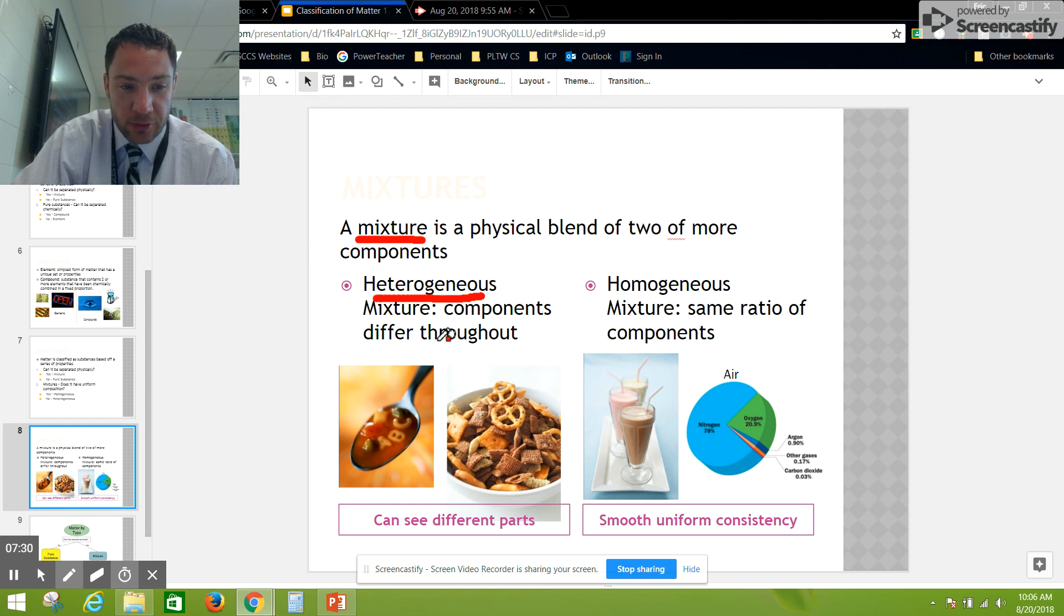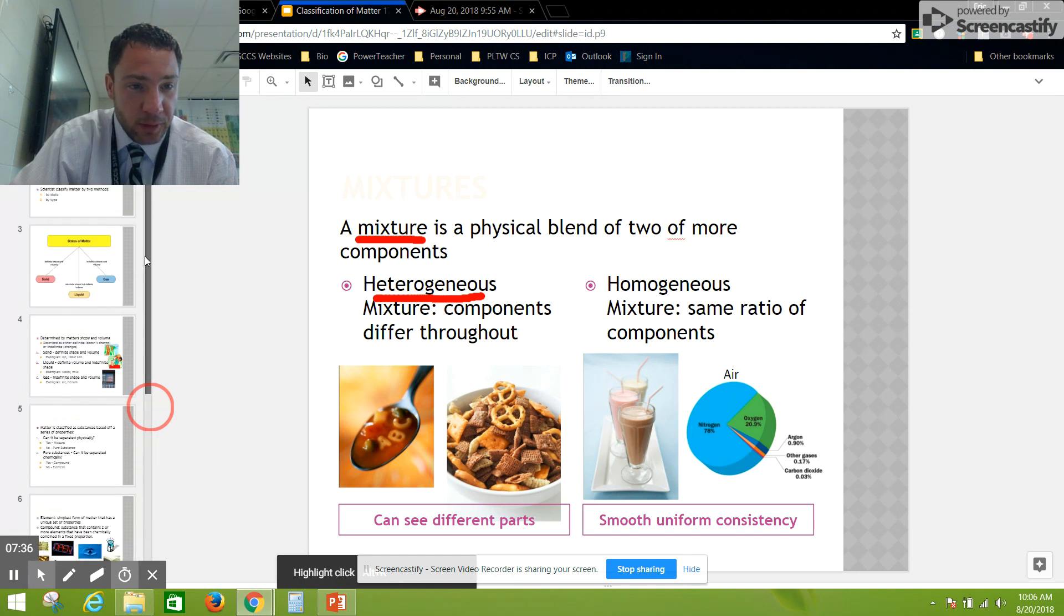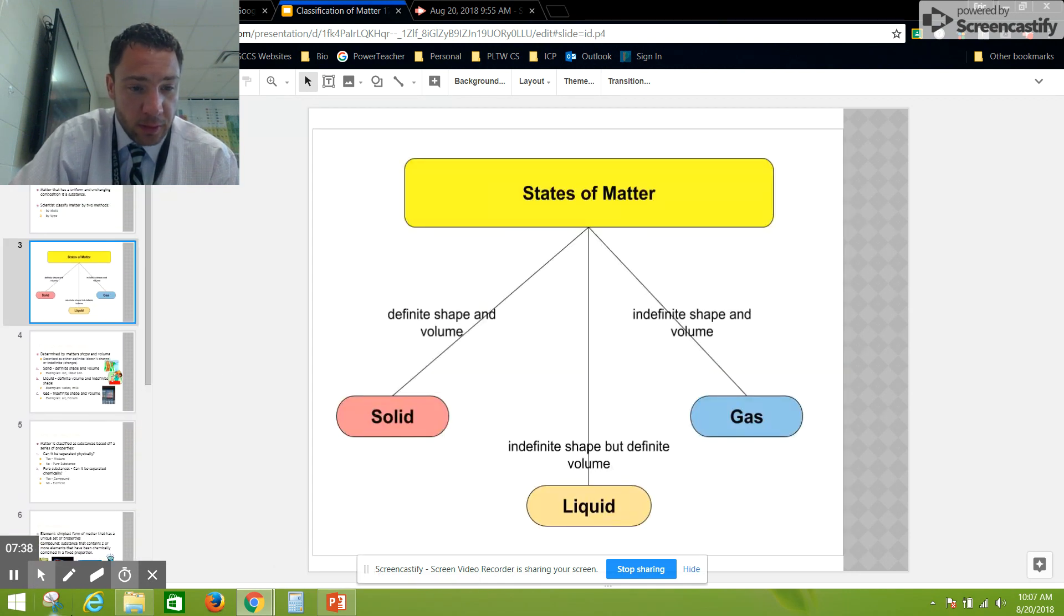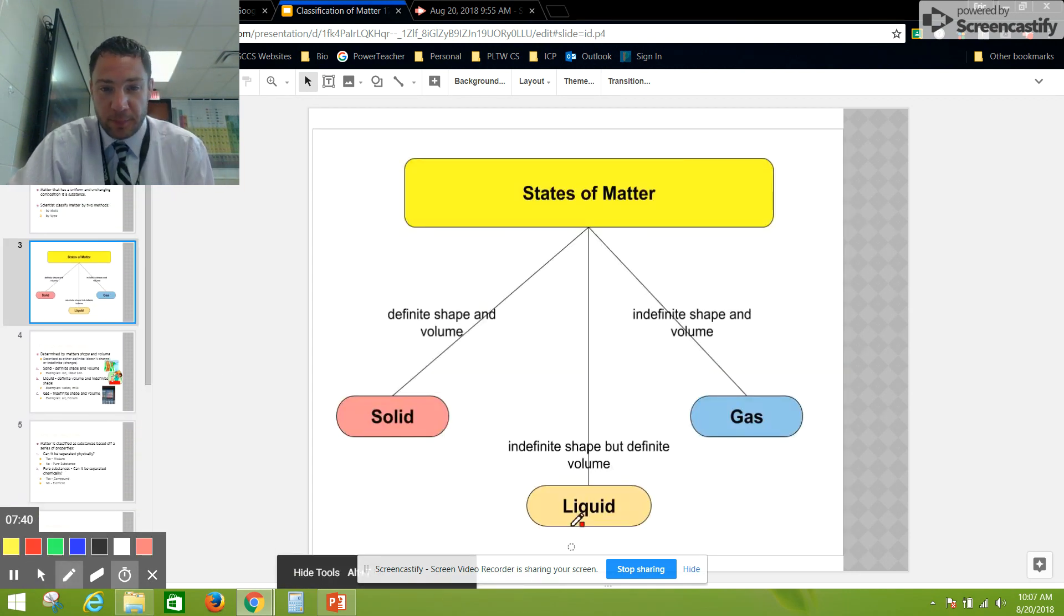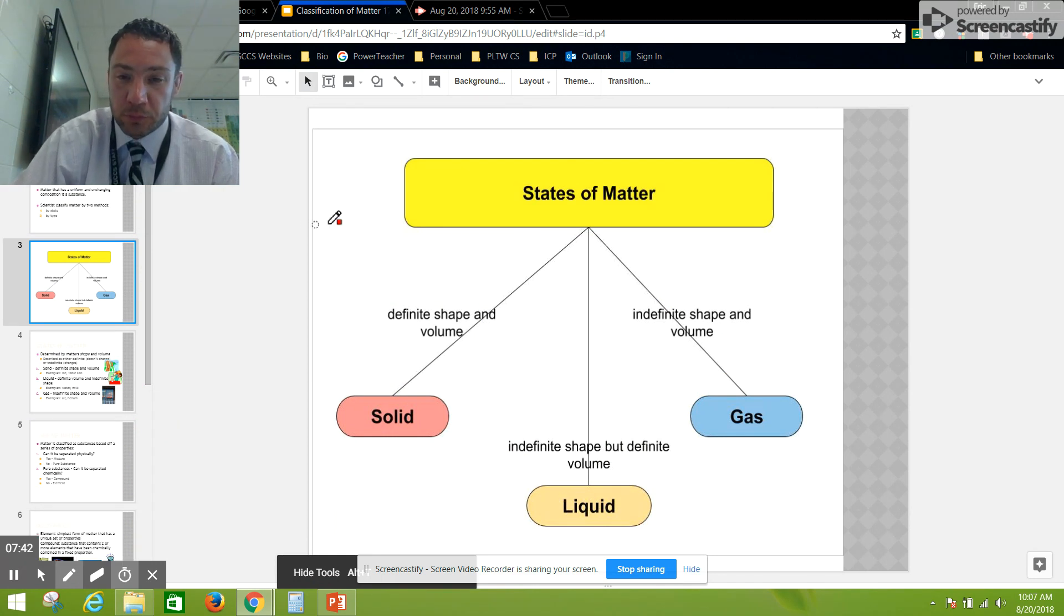Just to go back to our concept maps to review: the three states of matter are solid, liquid, and gas. Solids have definite shape and volume. Liquids have indefinite shape but definite volume. Gases have indefinite shape and volume.